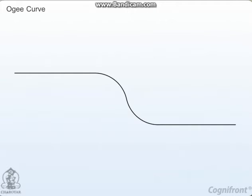An ogee curve is also known as a reverse curve and is a combination of two arcs that are reverse of each other.